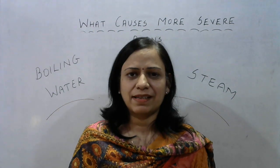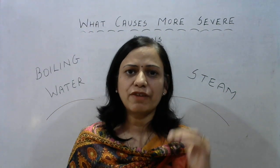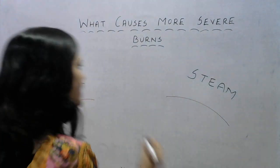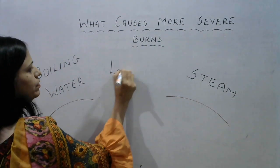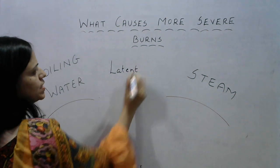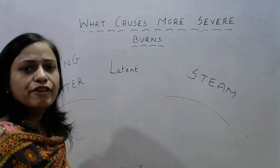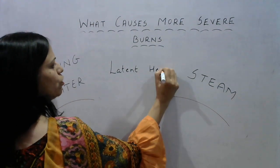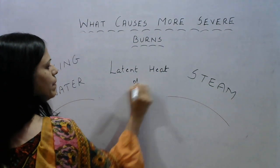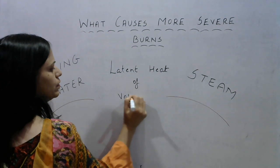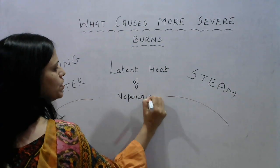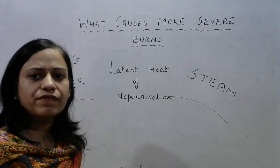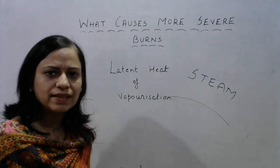Latent heat is of two types: latent heat of vaporization and latent heat of fusion. What is involved here is the latent heat of vaporization, because the state is being converted from liquid to vapor. The latent heat of vaporization is responsible for steam causing more severe burns than boiling water at the same temperature.